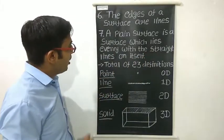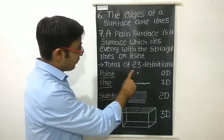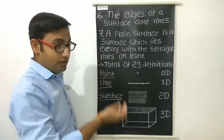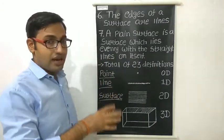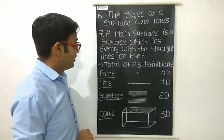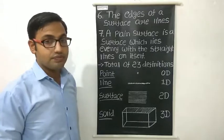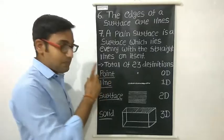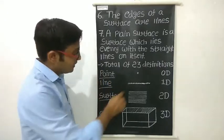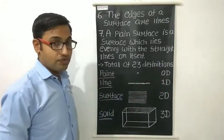Euclid gave a total of 23 definitions, but today we study only the first 7. Let's understand all these definitions using diagrams. The very basic element of geometry is a point, which is a zero-dimension figure.